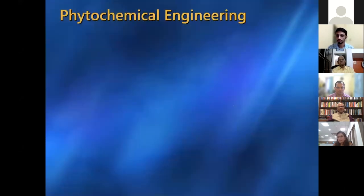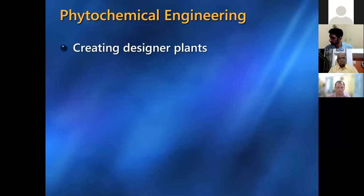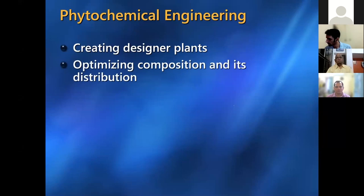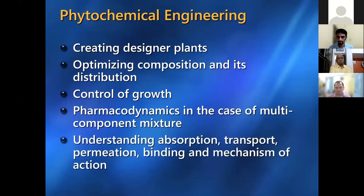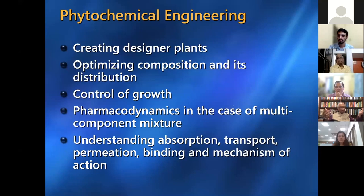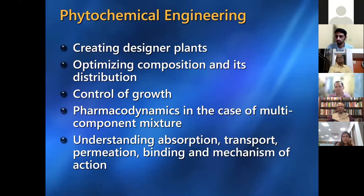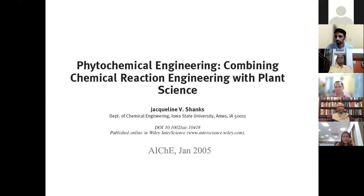Phytochemical engineering involves designer plants — optimizing composition and distribution, control of growth, pharmacodynamics in multi-component mixtures, absorption, transport, and permeation. Designer plants might look like fantasy, but that is true. The startup Mapp Biopharmaceutical created antibody therapeutics from bioengineered tobacco plants for the Ebola virus — this is a ground reality. Professor Sharma spoke eloquently about catalysis. Historically, we had low selectivity chemistry, high plant costs, and low catalyst sophistication producing simple molecules. Now, the future catalysts will be natural enzymes, producing complex molecules with high selectivity, high sophistication, and low plant costs. That journey cannot take place without transdisciplinarity.